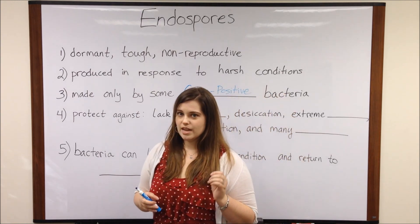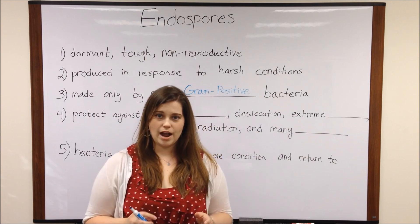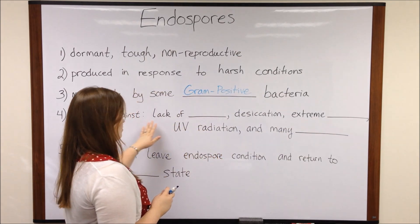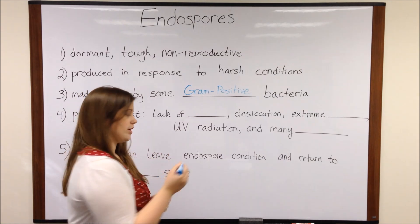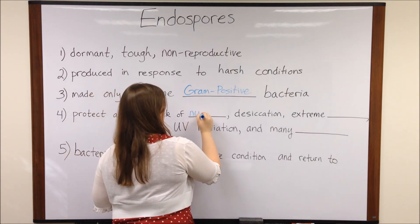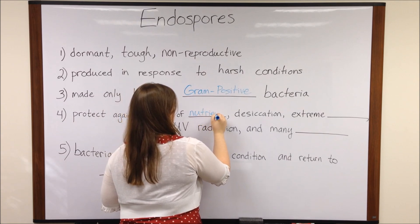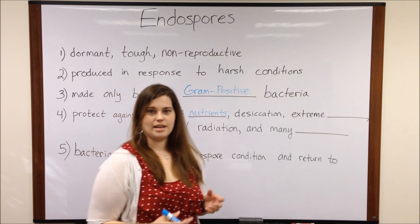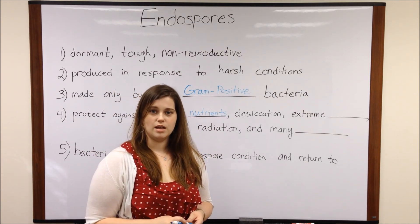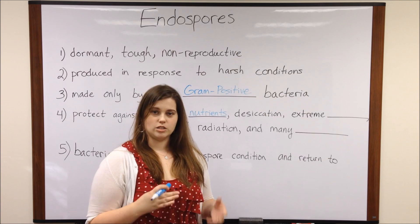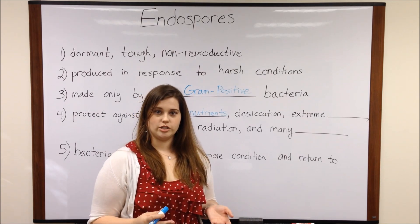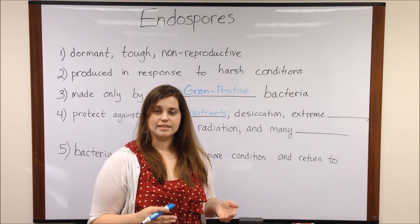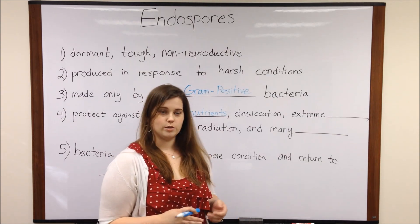These endospores can protect the bacteria against a wide variety of harsh conditions. For example, they can protect the bacteria against lack of nutrients. These bacteria may enter an endospore part of their life cycle if they are experiencing starvation of carbon or nitrogen, and instead they may form endospores.